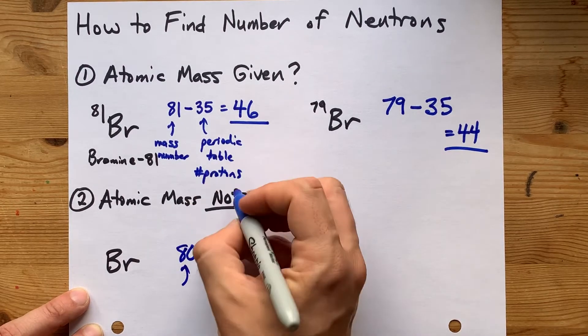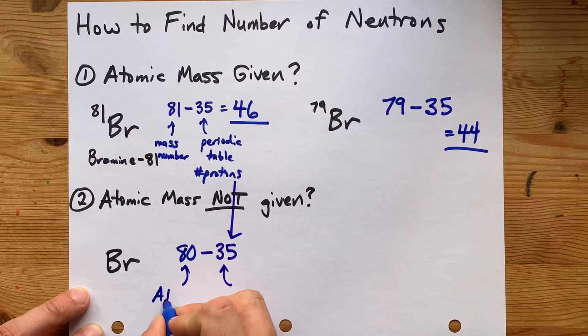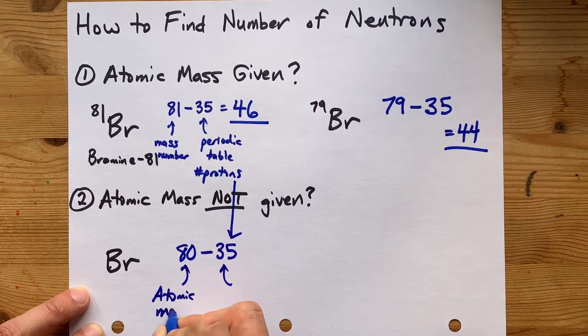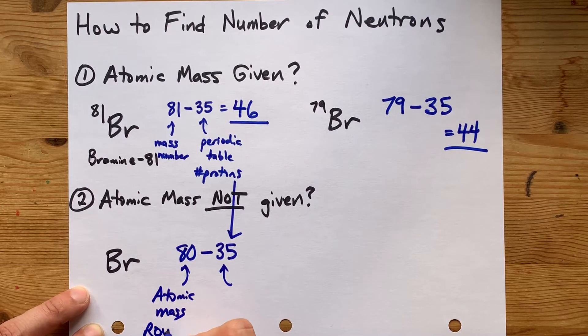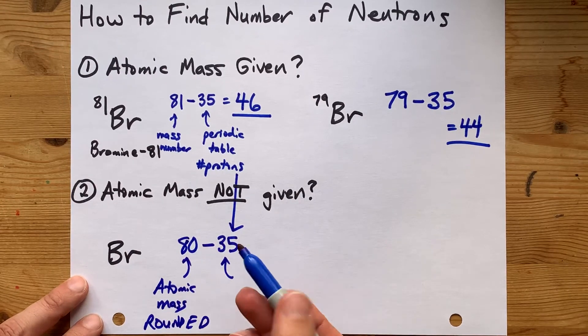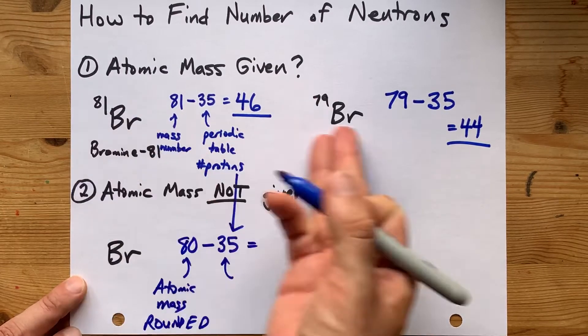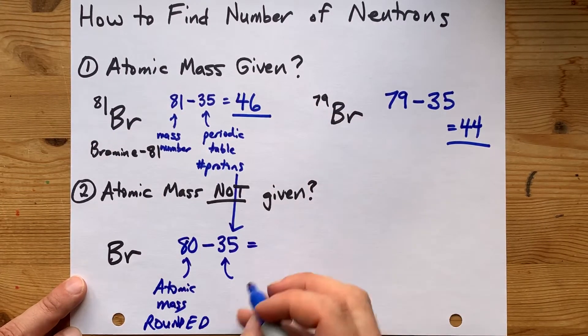Again, the 35 comes from the same place that that 35 came from. This is the atomic mass on the periodic table rounded. I don't like it when teachers do that, but teachers tend to at the beginning of the course because you don't yet know that atoms come in different flavors.